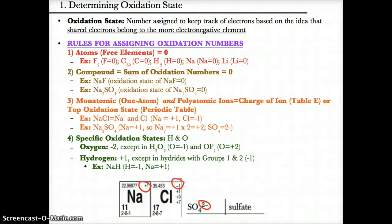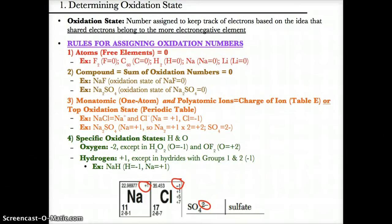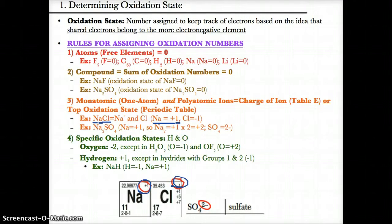Next, we have monatomic and polyatomic ions. You can find the oxidation states of monatomic ions from the periodic table by looking at the top oxidation state of the element. Polyatomic ion charges can simply be found by looking at table E. For example, in NaCl, Na's charge is +1 based on its top oxidation state on the periodic table, and Cl's charge is -1 based on its top oxidation state.